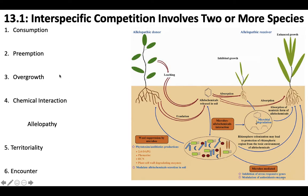First, let's talk about consumption. Consumption is when individuals of one species inhibit individuals of another by consuming a shared resource. So think of species A and species B both eating the same food — one of them eats it before the other one gets to it. That's consumption.